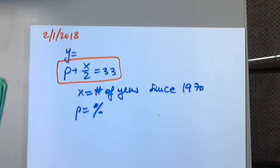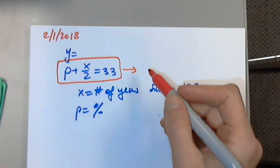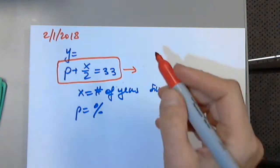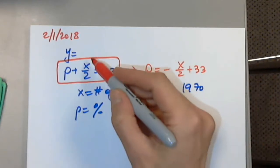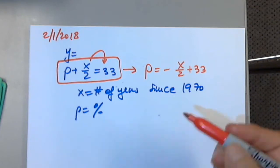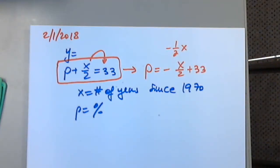So p is basically y and x is x. In order to determine the percentage, I will solve this equation. So p equals negative x over 2 plus 33. I'm moving this term to the other side. I can write it as negative one-half times x — that's the coefficient of x.